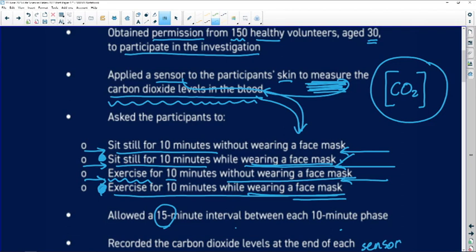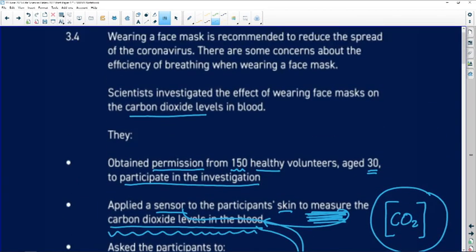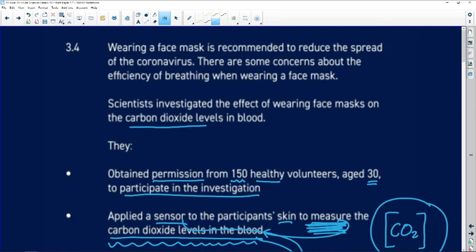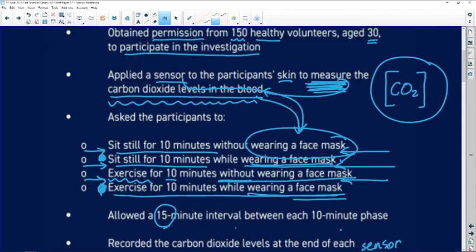Our other variable is the face mask. Are they going to be wearing a face mask or without the face mask? Because going back to what we were trying to measure, is there some change in the efficiency of our breathing when we wear a face mask? The investigators controlled whether you were going to be wearing a face mask or not. So this variable is controlled by the investigator.